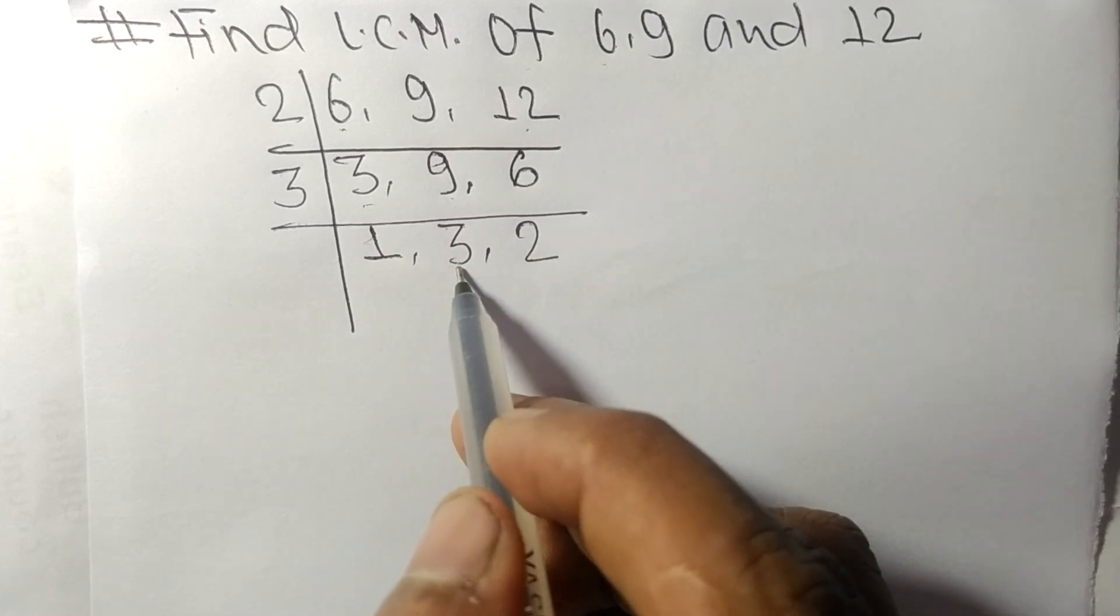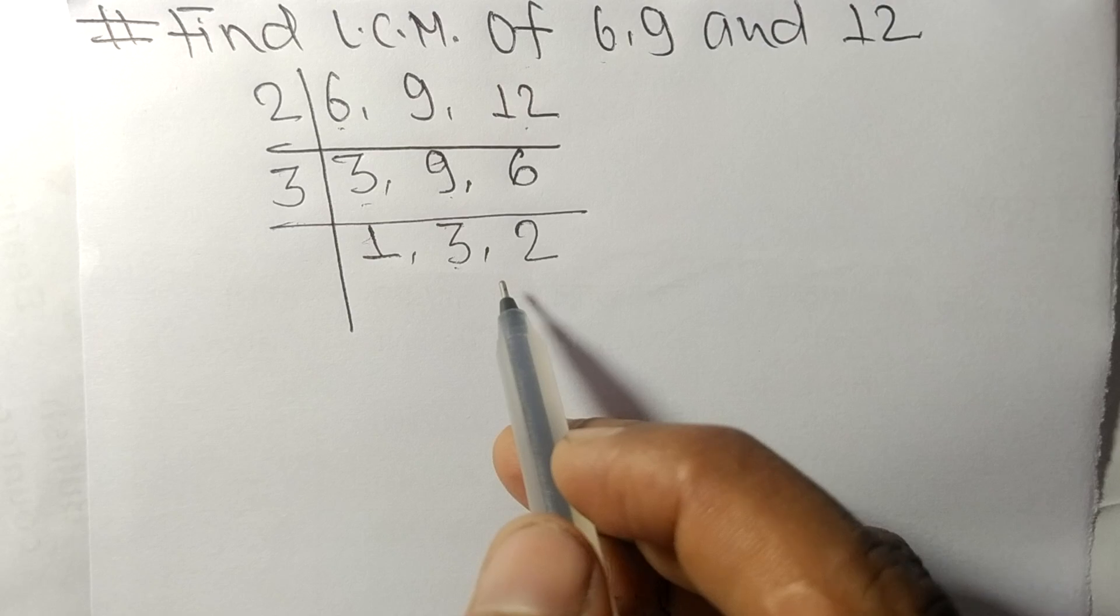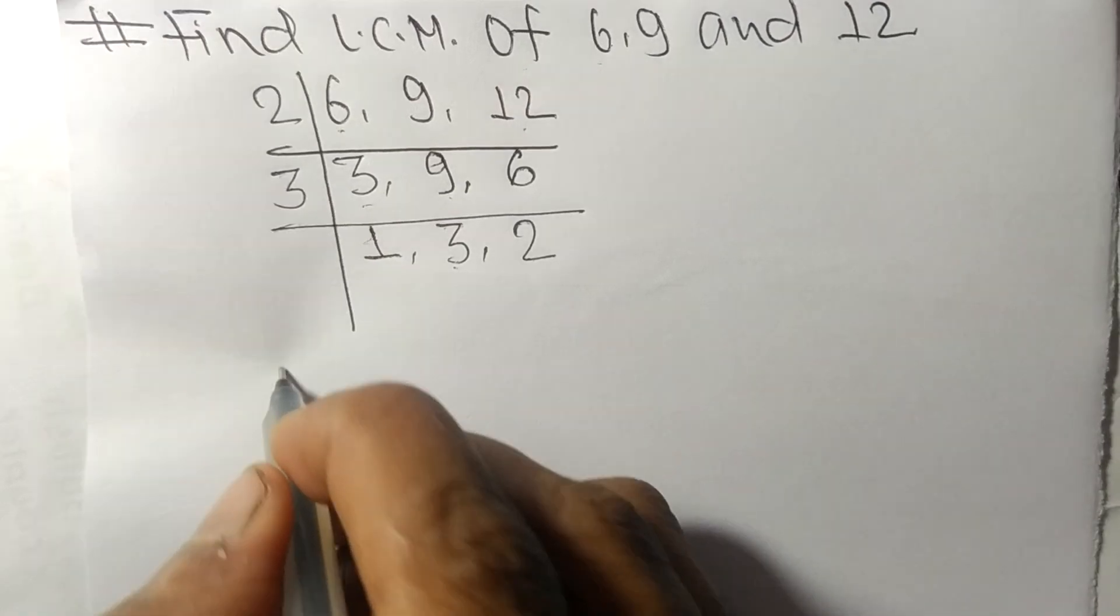Now we got 1, 3 and 2 which are not exactly divisible by the same number.